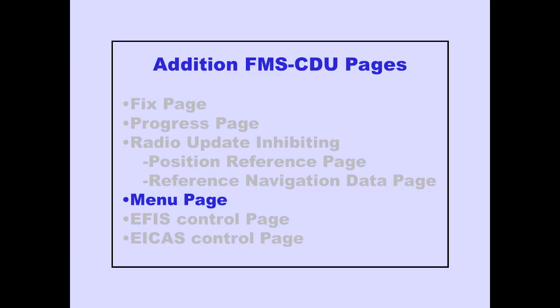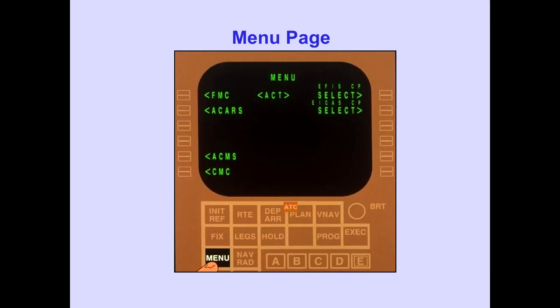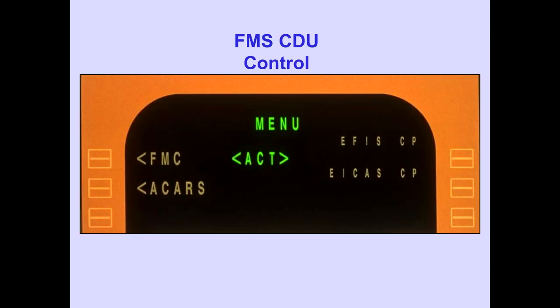Let's now discuss the Menu Page. Pushing the Menu Key displays the Menu Page. The Menu Page is used to select the system to be controlled by the FMS-CDU. Active is displayed next to the system controlling the CDU.